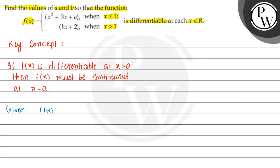We will use the same concept here to solve the given question. The given function is f(x) equal to x squared plus 3x plus a when x is less than or equal to 1, and bx plus 2 when x is greater than 1. Since f(x) is differentiable at all x belonging to R, and the function is divided at x equal to 1 into two sides, f(x) is continuous at x equal to 1.